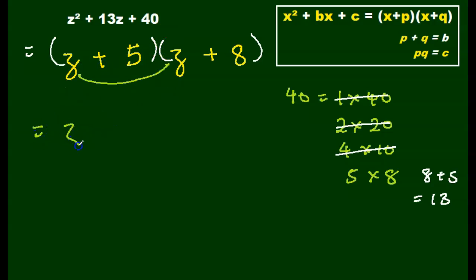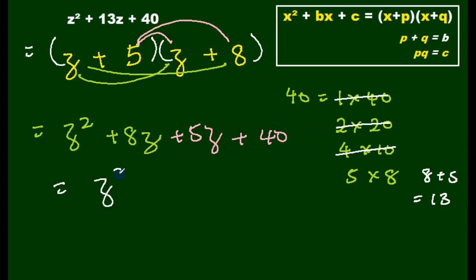Check. z times z gives me z squared. z times 8 gives me 8z. 5 times z gives me 5z. 5 times 8 gives me 40. Simplify. I get z squared plus 13z plus 40. Answer checks out.